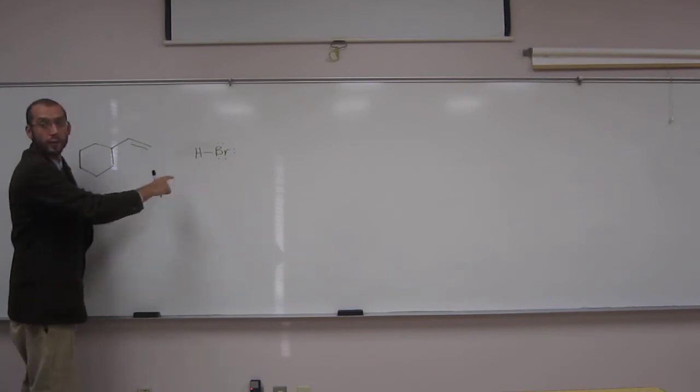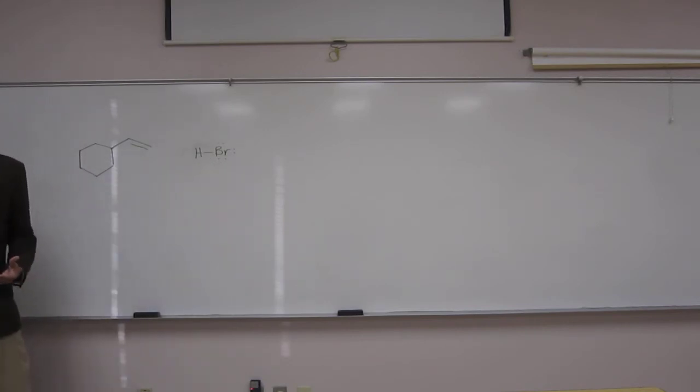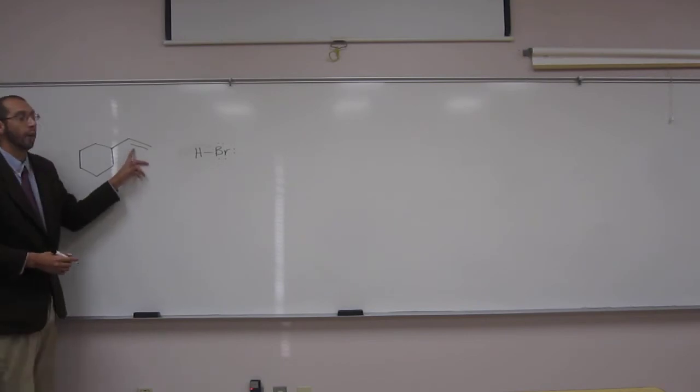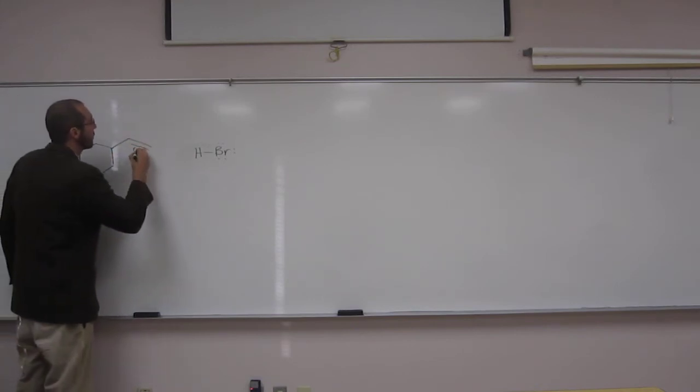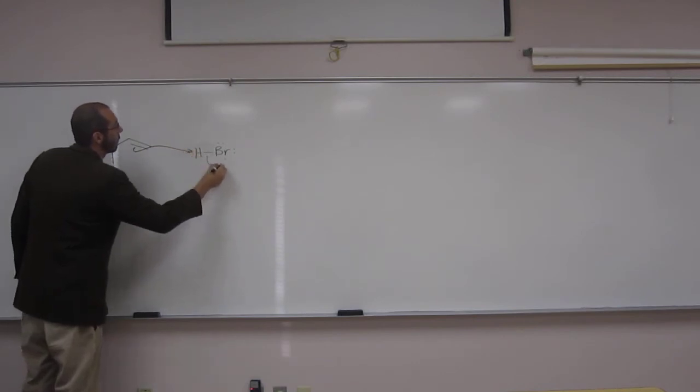So here we've got an acid. So if we have an acid, we should be predicting an acid-base reaction, and that's what we have here. The base here is going to be this set of pi electrons. Well, let's just show the mechanism first.